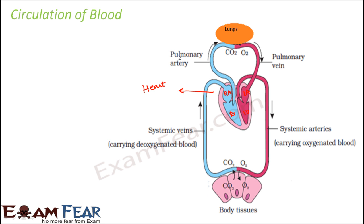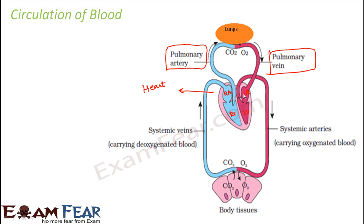When the valve opens, blood flows from the right auricle to the right ventricle, and then from the right ventricle it goes to the lungs. The pulmonary artery carries this deoxygenated blood from the heart to the lungs. Inside the lungs, real exchange of gases — oxygen and carbon dioxide — takes place. The oxygenated blood then comes out of the lungs, carried by the pulmonary vein to the left auricle, the receiving chamber of the heart.